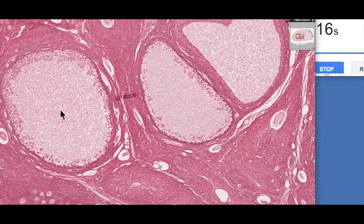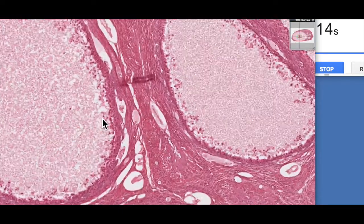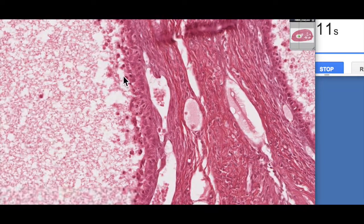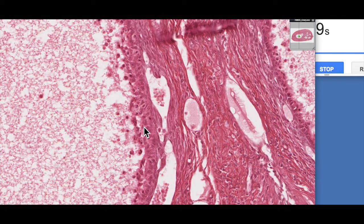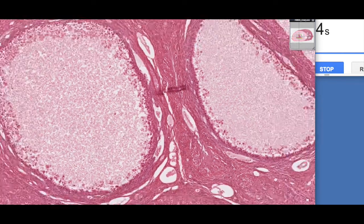Here's another one which is undergoing atresia. It's a very common feature of ovaries. All the granulosa cells are starting to fall away and displace, so this follicle is undergoing breakdown.